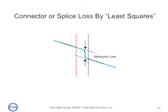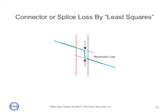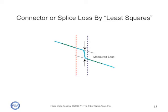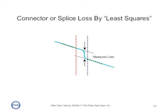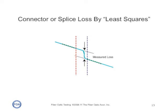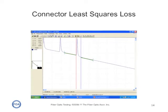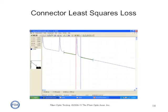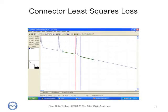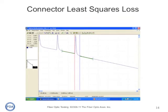To reduce this error, OTDRs can measure connector or splice loss by a least squares method. It fits a curve to the fiber before the event and after the event, then calculates the separation of the two curves. This removes any excess loss caused by the length of fiber between the two markers and generally gives a more accurate loss measurement. It's especially useful for very reflective connectors where the tail of the reflectance peak forces the markers to be set far apart. This is generally the most accurate way to make measurements of loss in an OTDR on both reflective and non-reflective events like fusion splices.